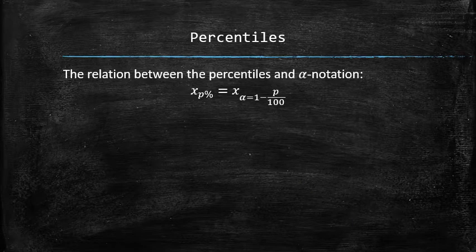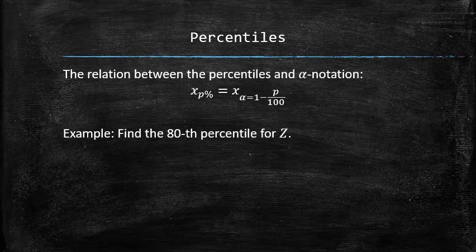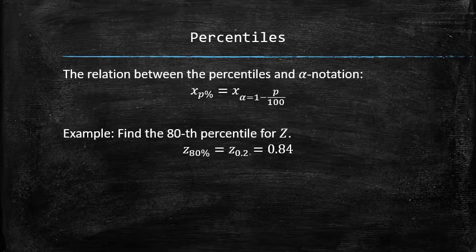For example, we can express the 80th percentile of z as z sub 0.2, which we can find using the previously discussed method.